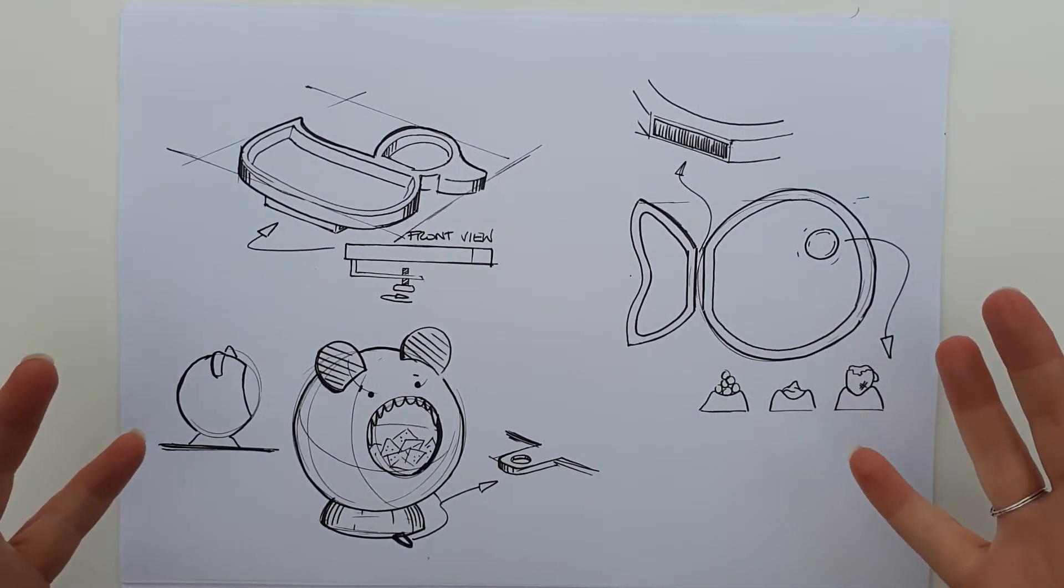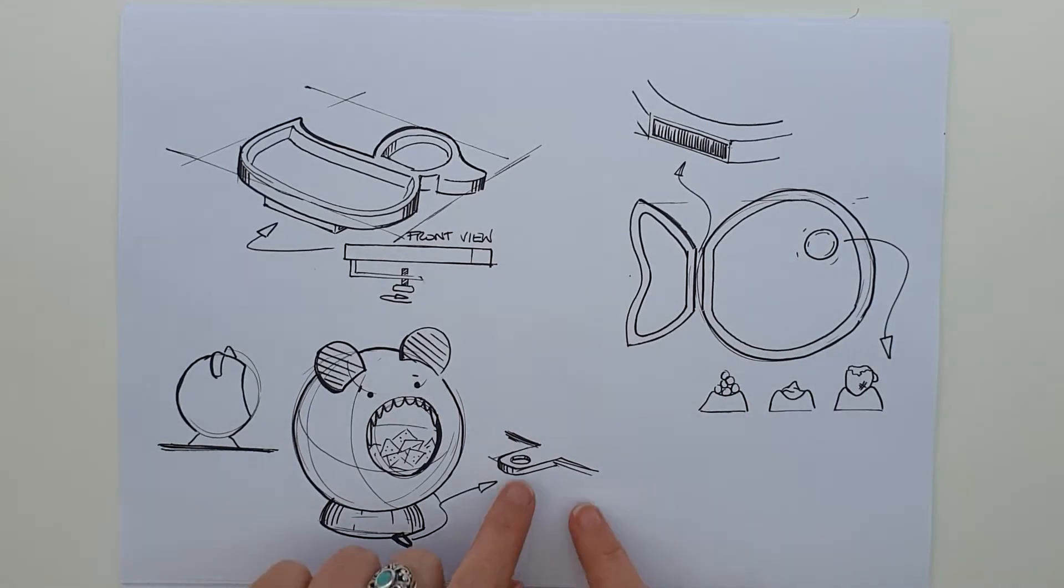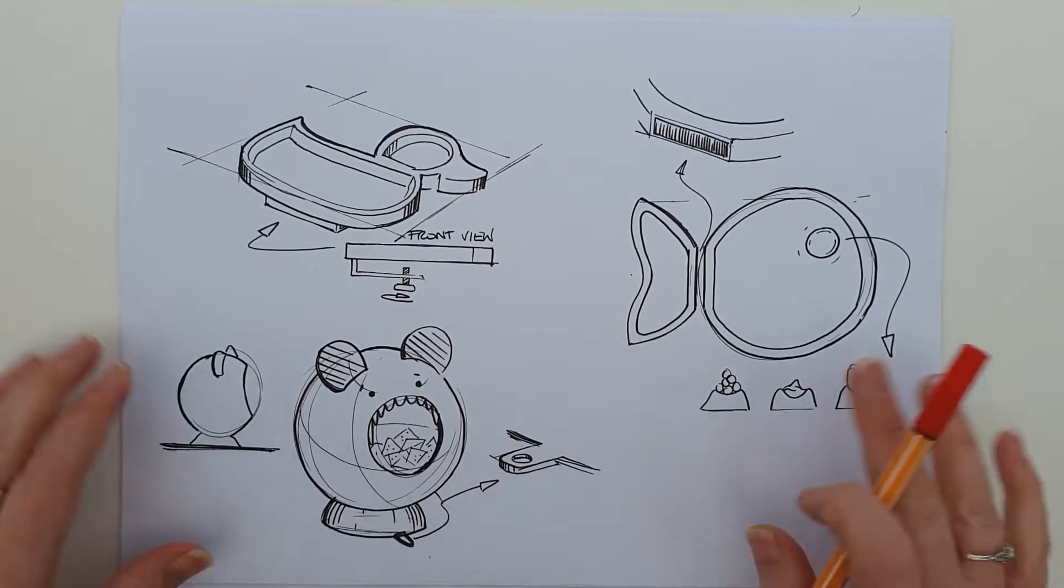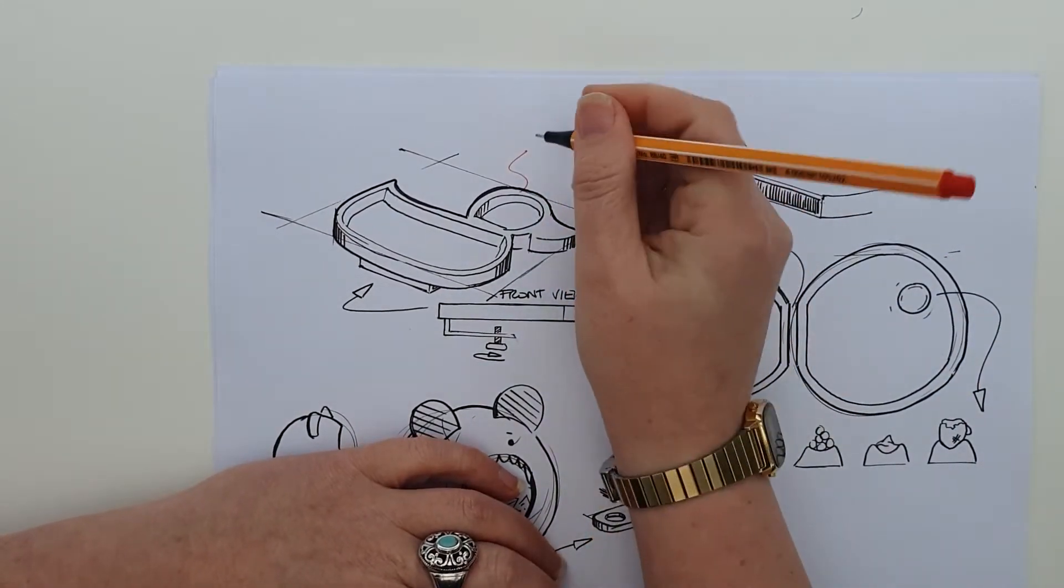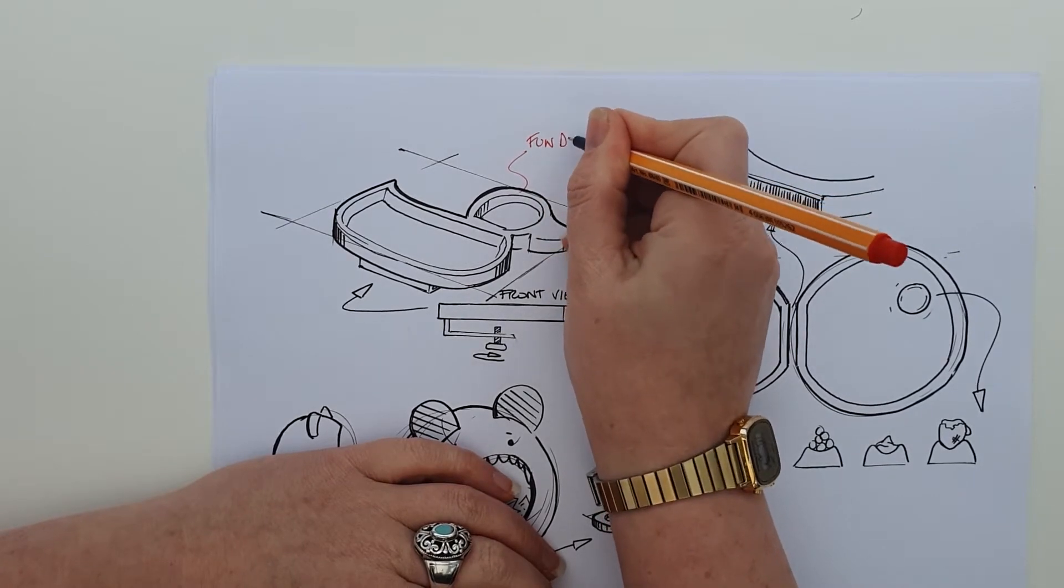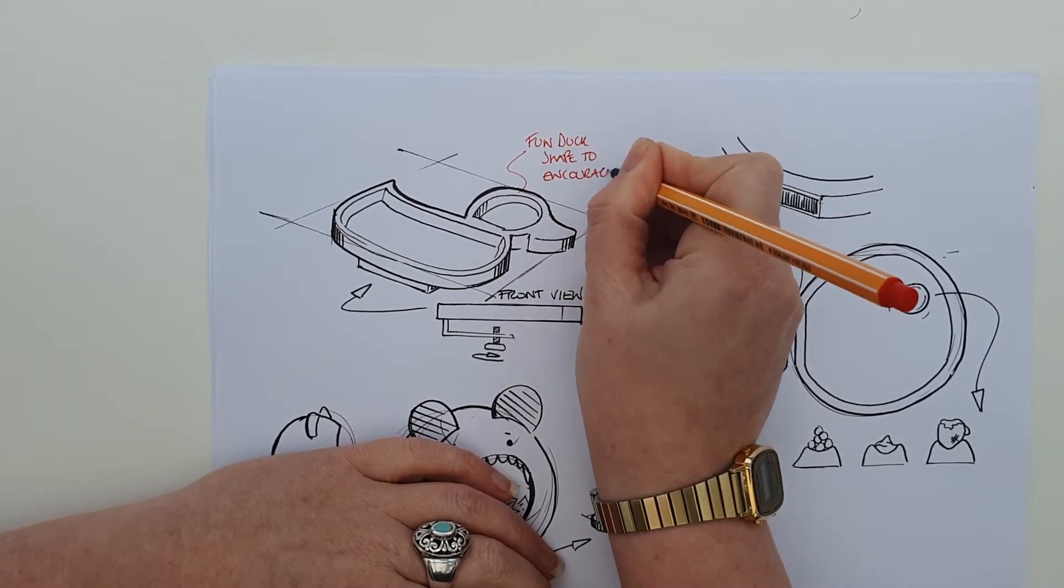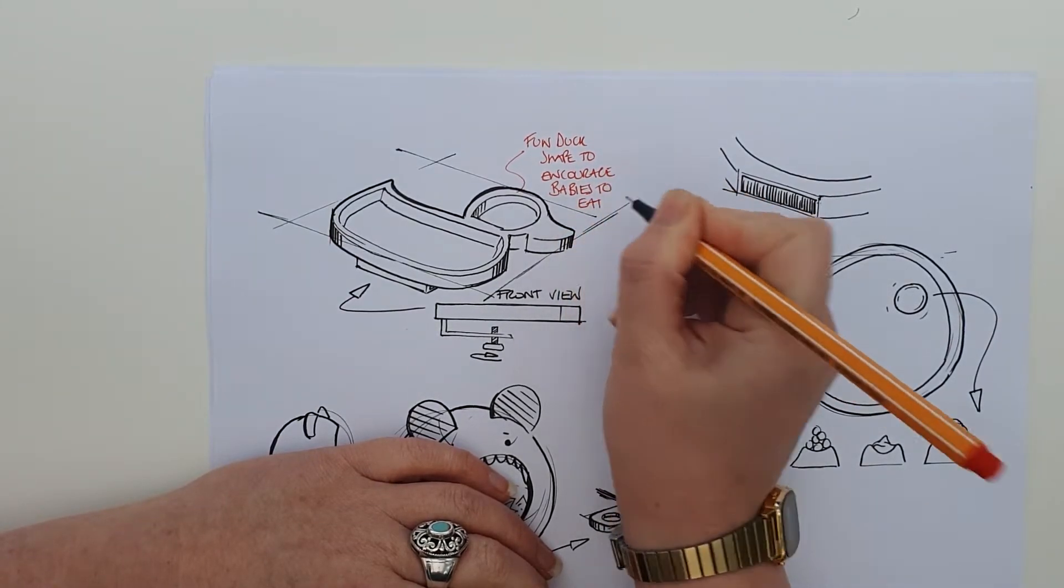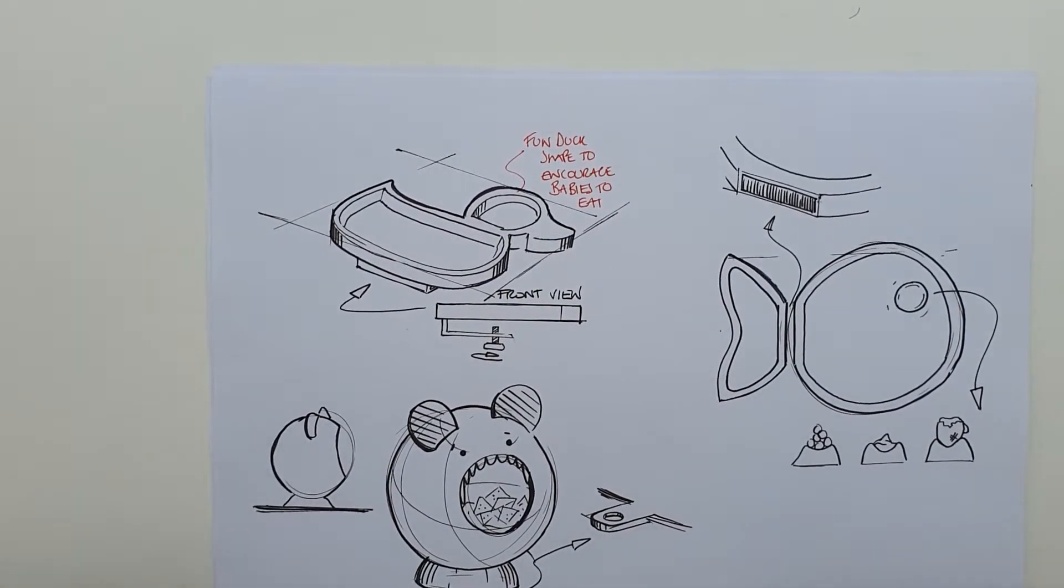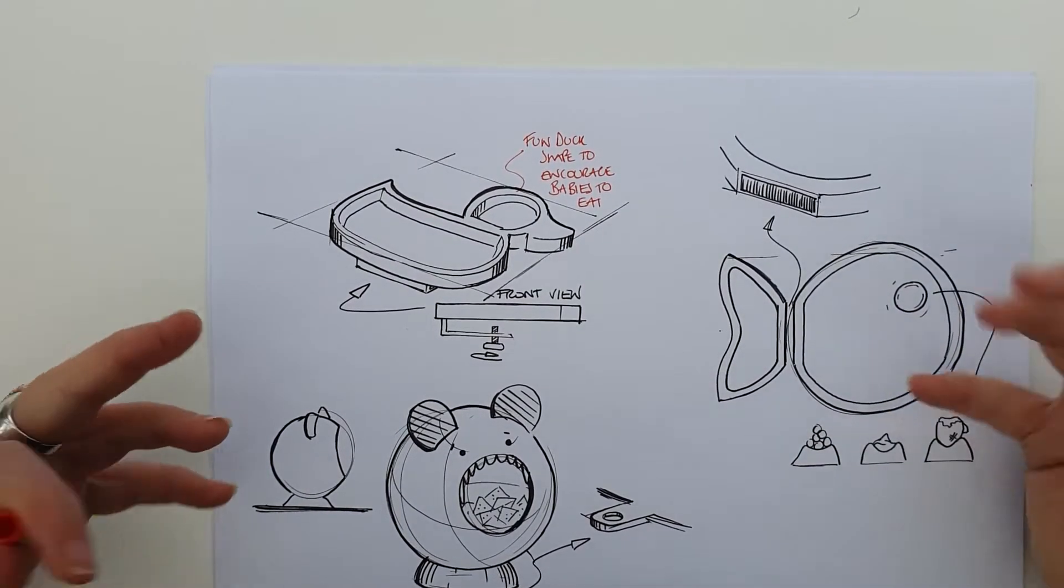I've generated some random combinations. Here are my sketches - you can clearly see what they look like, but you don't know anything about these sketches. You don't know how they work, what this strip here is, why this part is here, what this tab is for. So we need to explain these things in our annotations. We'll start off with the duck. First thing I'm going to discuss here is the aesthetics, so it's a fun duck shape to encourage babies to eat.